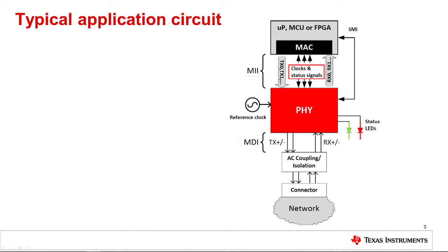The MAC interface may also include transmit and receive clocks and other status signals, depending on the version. There may also be another connection between the PHY and the MAC device, shown as SMI in the diagram, which stands for Station Management Interface. This is a two-wire communications port specified in the IEEE 802.3 standard that allows a system controller or the MAC to manage the PHY by accessing its internal registers.